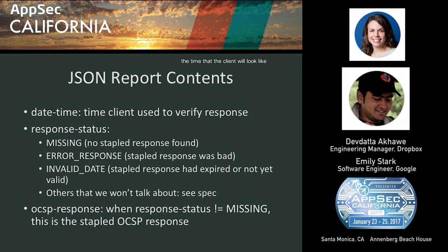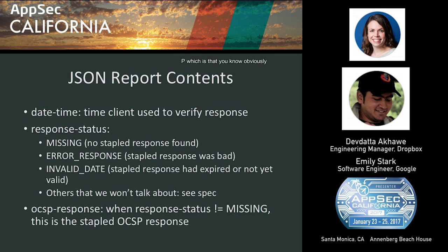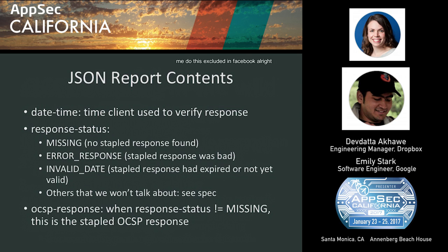The JSON Expect-Staple reports from Chrome have several fields. The first is date-time — the time the client was connecting. The response status is what Chrome thought of the OCSP response: it might say it expected a stapled OCSP response but there was none, or that the returned stapled response was invalid — not valid for this connection, or invalid date meaning the OCSP response was older than its validity window or from the future. The report also includes the actual OCSP response itself, so when the response data is not missing you have the actual OCSP response Chrome used for making decisions.